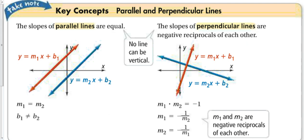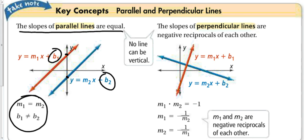Now let's compare parallel and perpendicular lines. Parallel lines have equal slopes but different y-intercepts. On a graph, the red and blue lines run side by side with the same slope but cross the y-axis at different points. The relationship is: m₁ = m₂, but b₁ ≠ b₂.